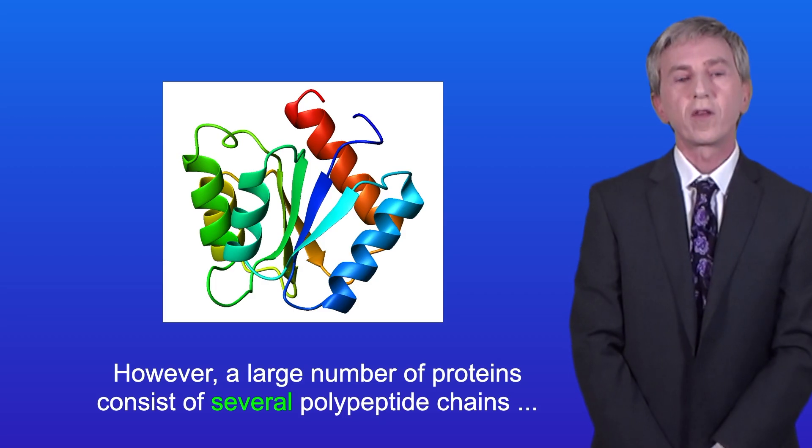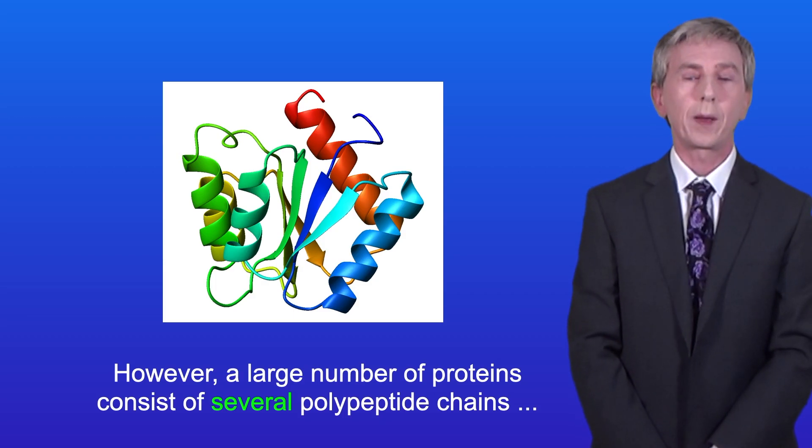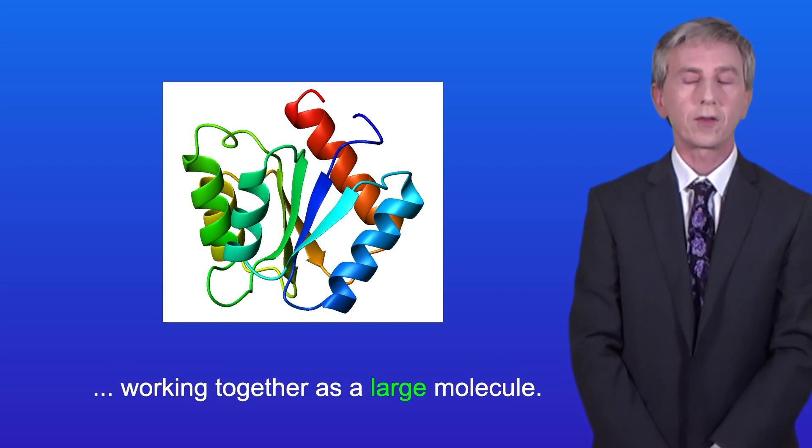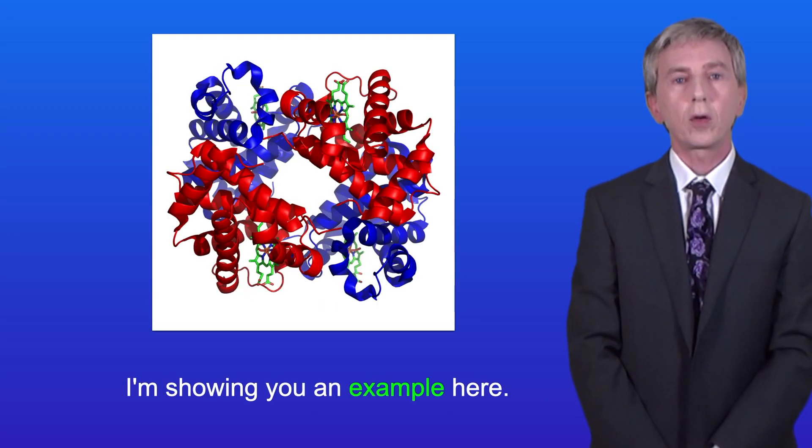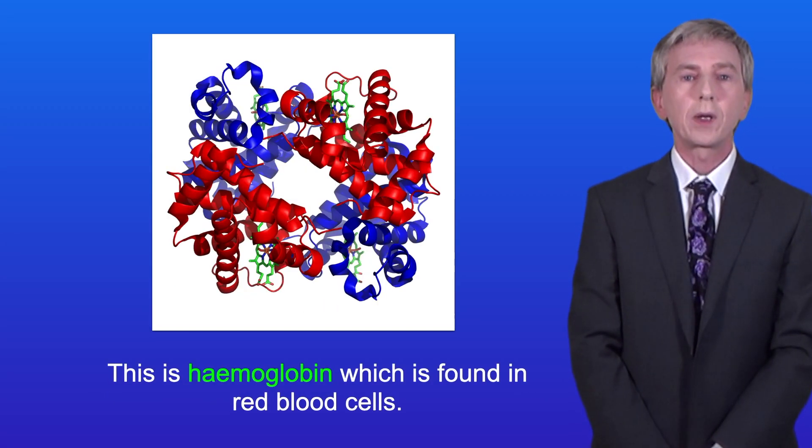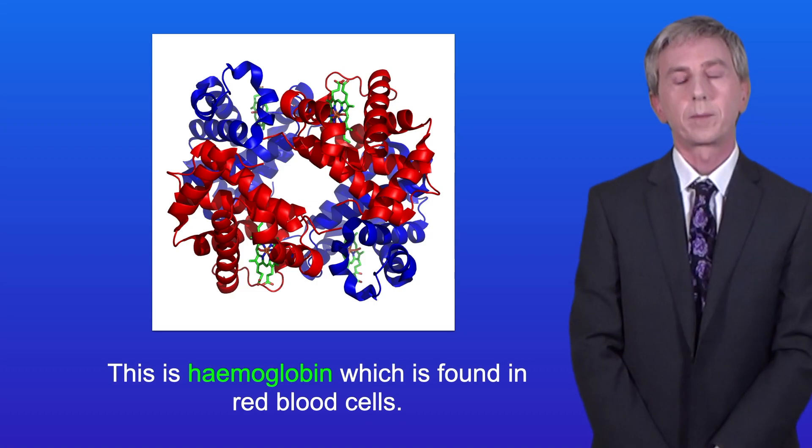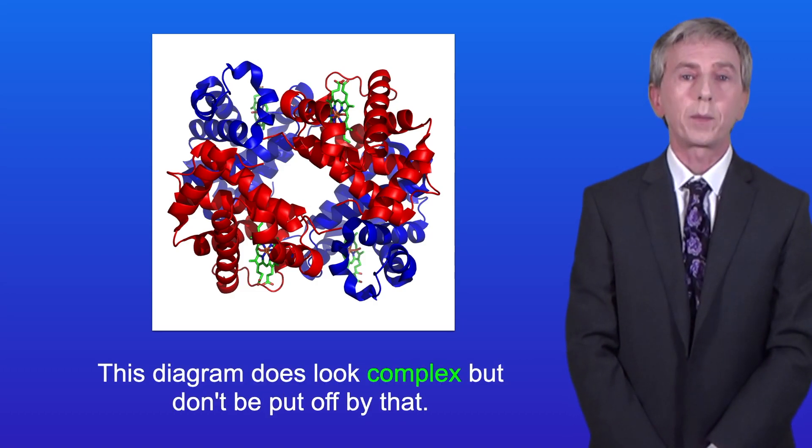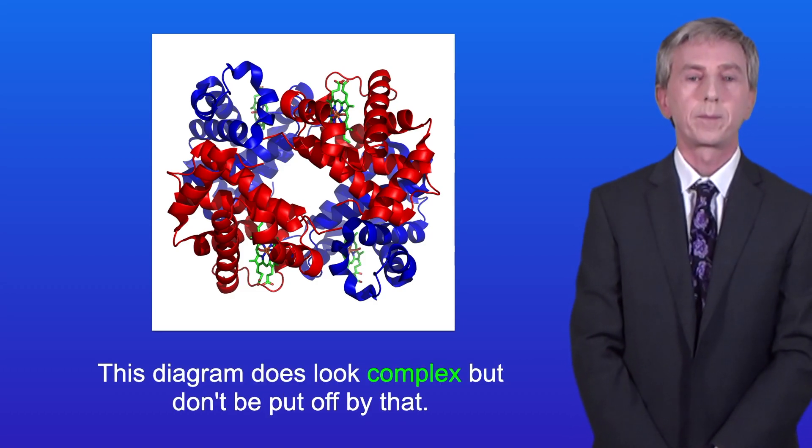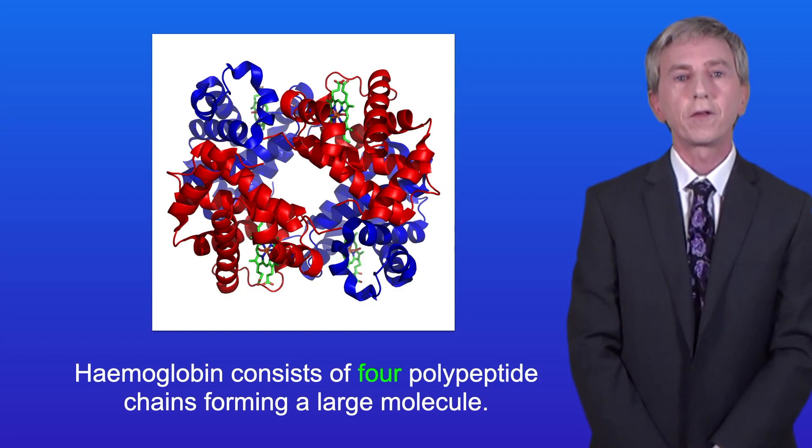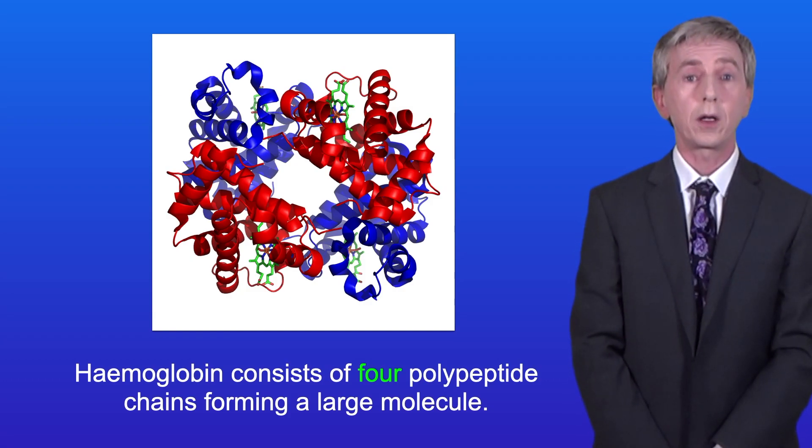However, a large number of proteins consist of several polypeptide chains working together as a large molecule. I'm showing you an example here. This is hemoglobin, which is found in red blood cells. This diagram does look complex, but don't be put off by that. Hemoglobin consists of four polypeptide chains forming a large molecule.